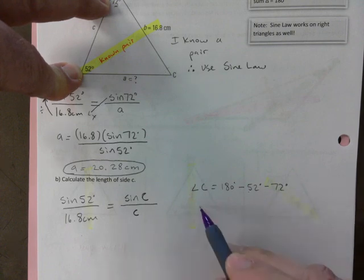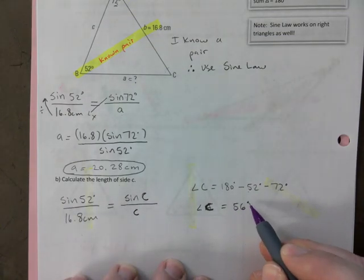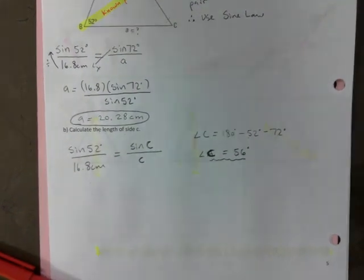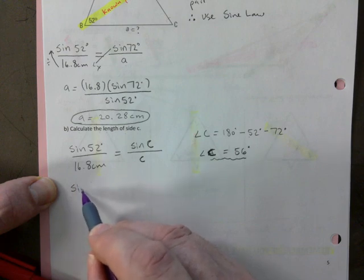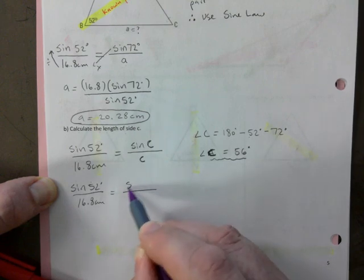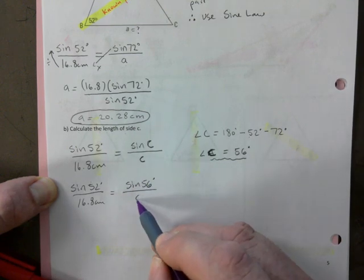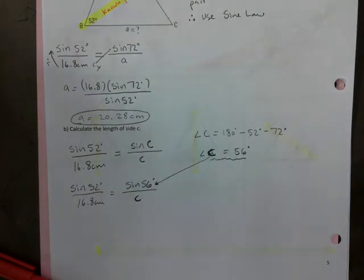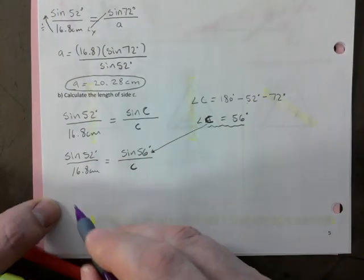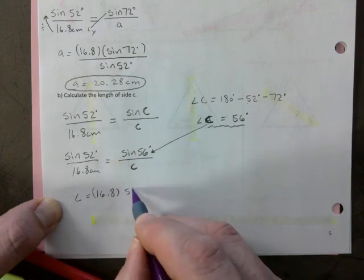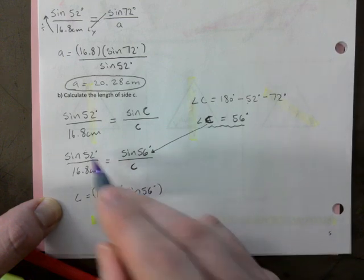So angle C is 180 minus 52 degrees minus 72 degrees. So I subtract the both angles I know. At 56 we said? Yeah. 56. Which is important. That's not my final answer. But I'm now going to use that to help me find side C. So sine of 52 over 16.8 centimeters is a sine of 56 over side C. That's the one I want to find. So maybe show that you've inserted that here. And so C is 16.8. I multiply these two here.